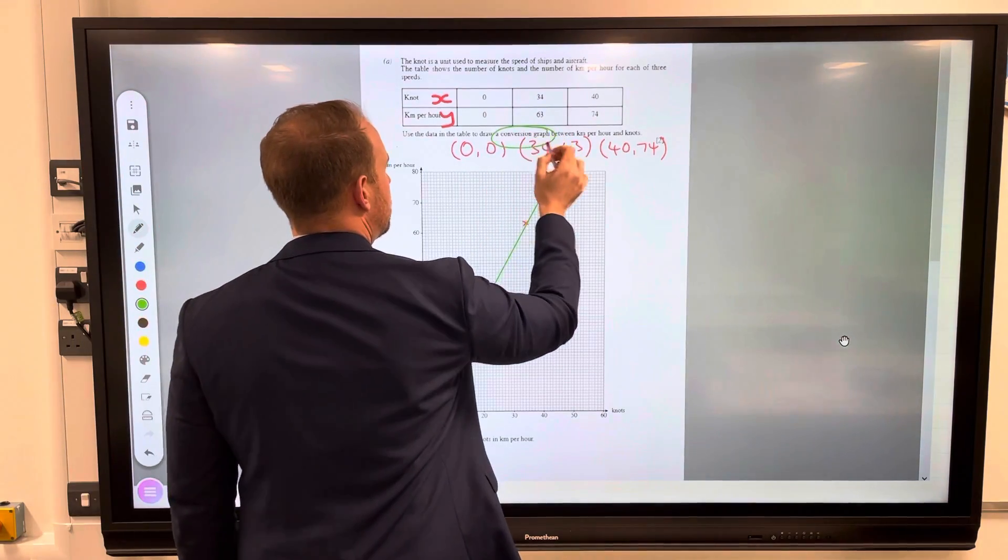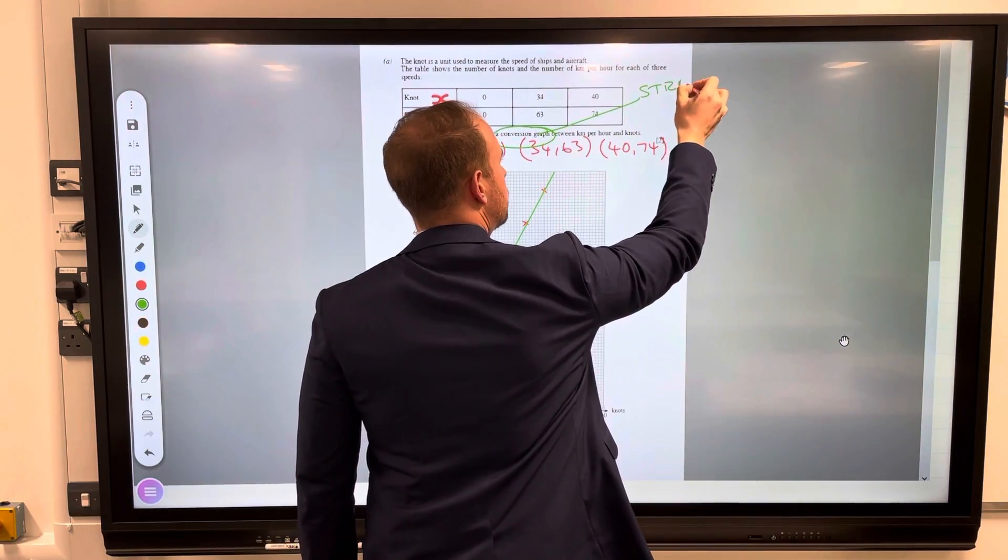You can see there we've got one straight line. So this conversion graph is a straight line.